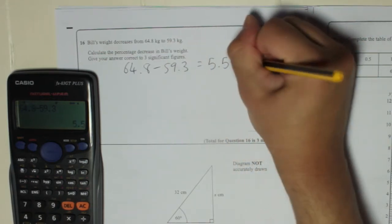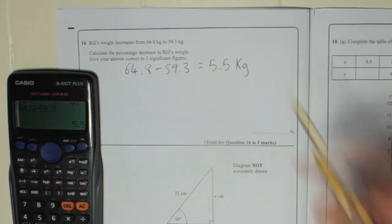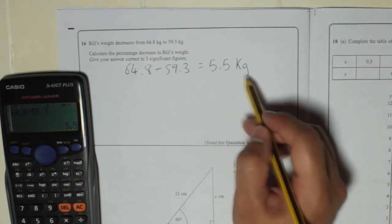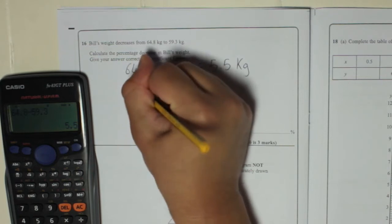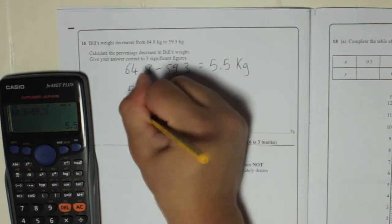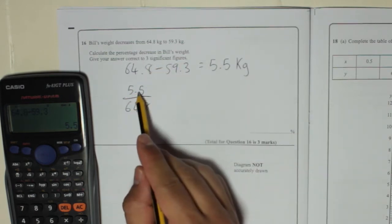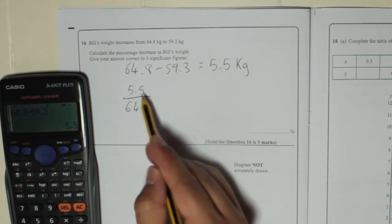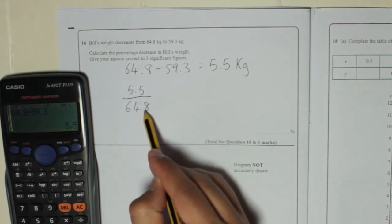So we want to know what percentage of his original weight is 5.5 kg. So to find out what percentage 5.5 kg is of his original weight, we're going to do 5.5 divided by his original weight, 64.8. Now that is how much weight he lost as a fraction of his original weight. He's lost 5.5 kg of his original weight of 64.8.